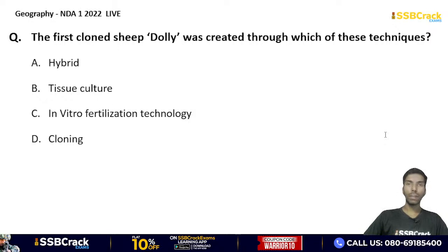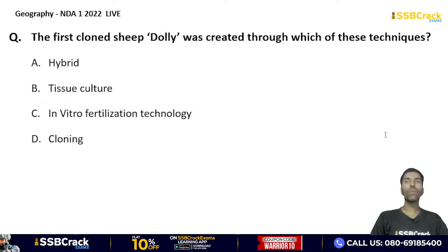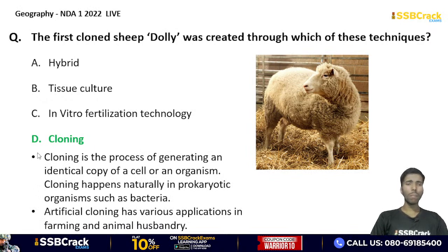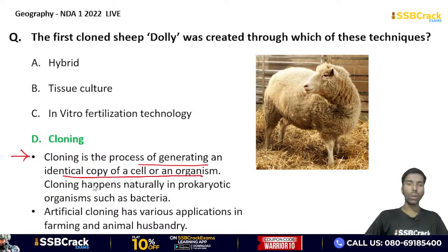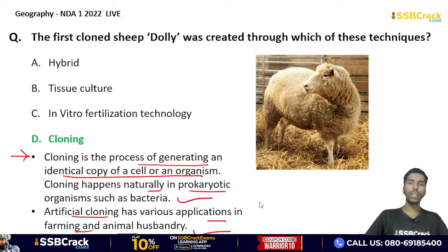The correct answer for the next question is option D. Cloning is the process of generating an identical copy of a cell or an organism. Cloning happens naturally in prokaryotic organisms such as bacteria. Artificial cloning has various applications in farming and animal husbandry. The first sheep produced through cloning was named Dolly.